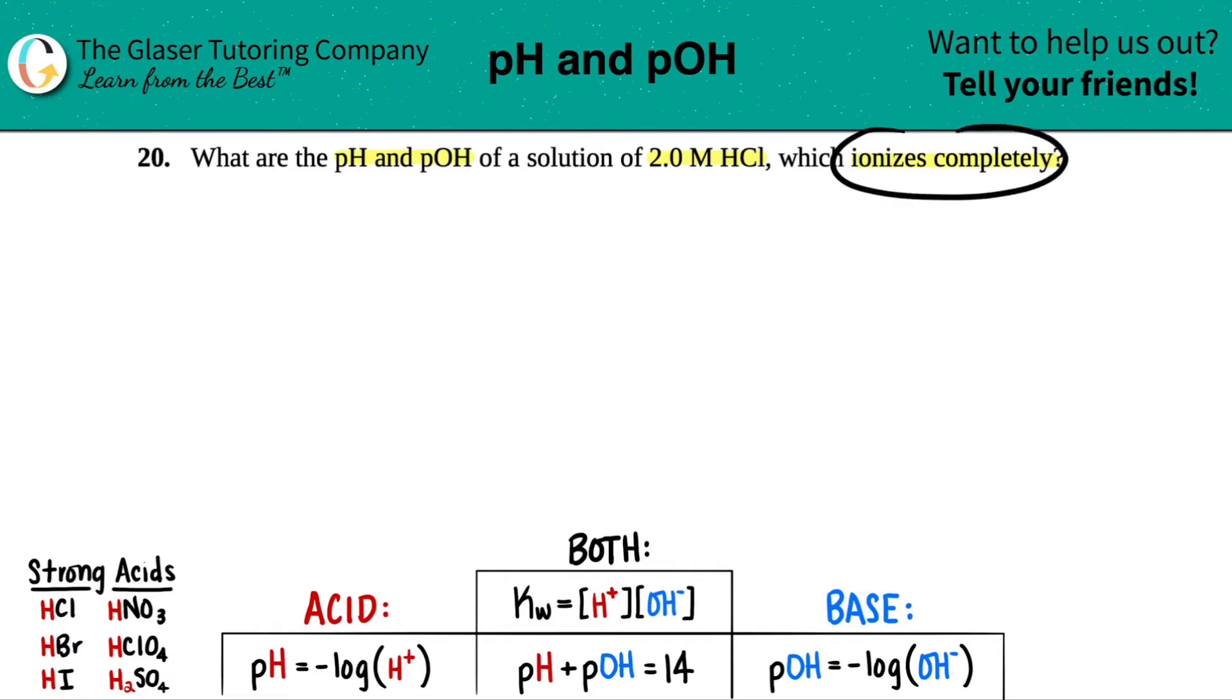Now they did give us a little hint here. They did say that the HCl is going to ionize completely, but whenever you see that you have HCl, something should be going off in your mind that says, wait a minute, this is one of my special compounds. And HCl is a strong acid.